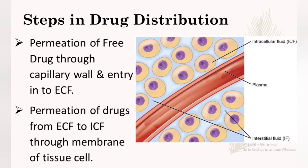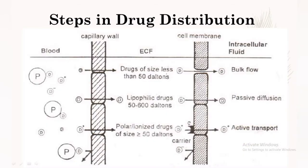There are some steps in drug distribution. First, the drug should pass through the capillary wall, and then move from extracellular fluid to intracellular fluid through the membrane of the tissue cell, as you can see in the picture. The drug is present in blood vessels, and when drug molecules cross the capillary wall, they enter the extracellular fluid, also known as interstitial fluid. From the interstitial fluid, depending on their ionization and size of molecule, they can enter the intracellular fluid — that is, inside the cell — through the cell membrane.